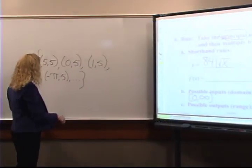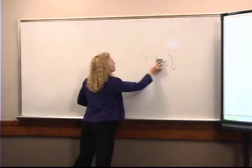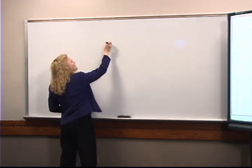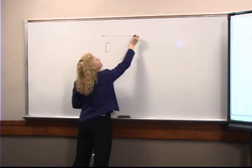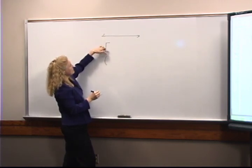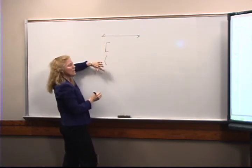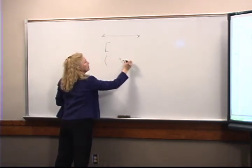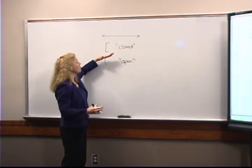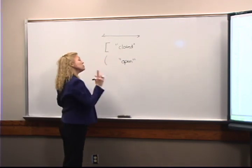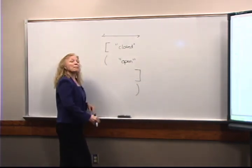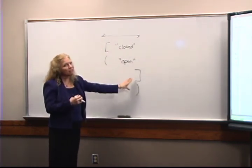Let me take a moment to talk about interval notation. What we do is show a section of the number line with an interval using either a bracket — a squared-off bracket — or a parenthesis. The open parenthesis means you're not including that endpoint; the closed bracket means you are including that endpoint. We do the same thing for the other end — bracket for closed, parenthesis for open.